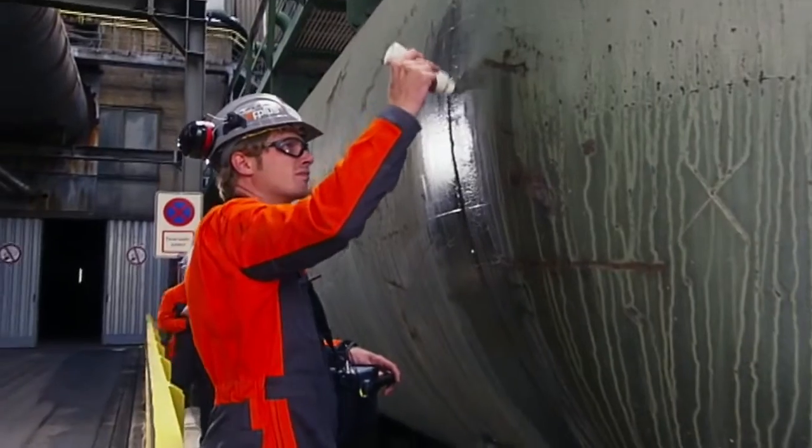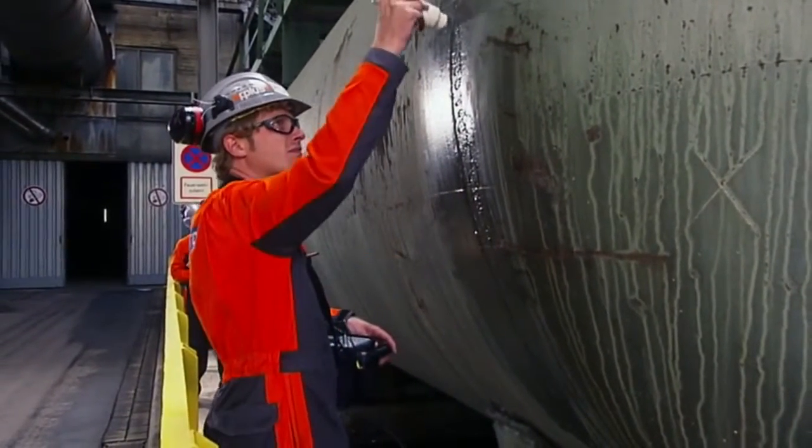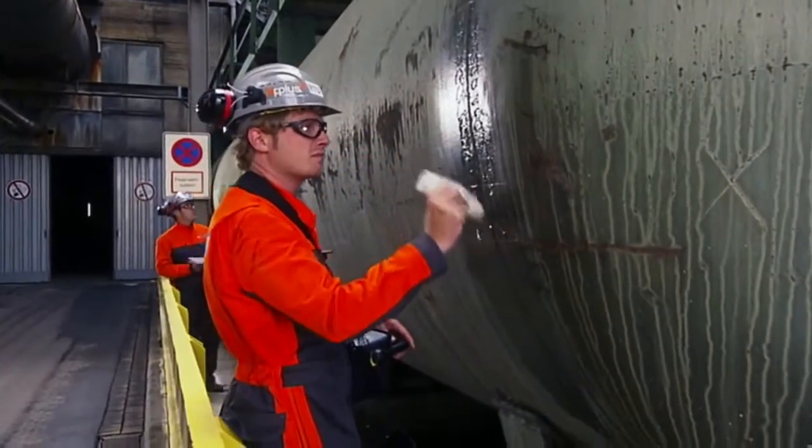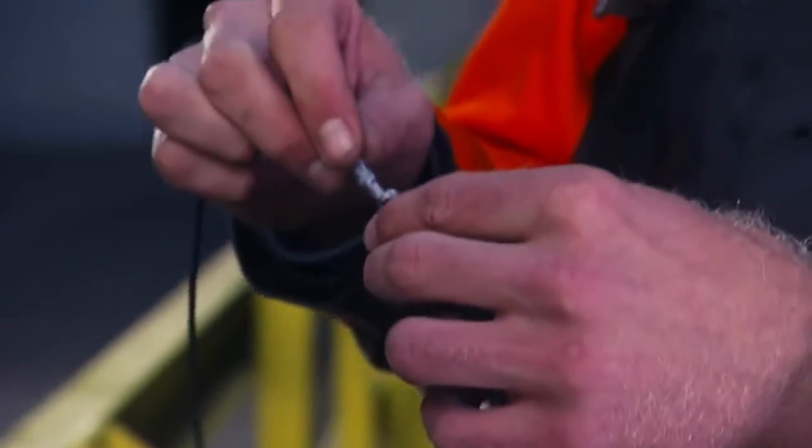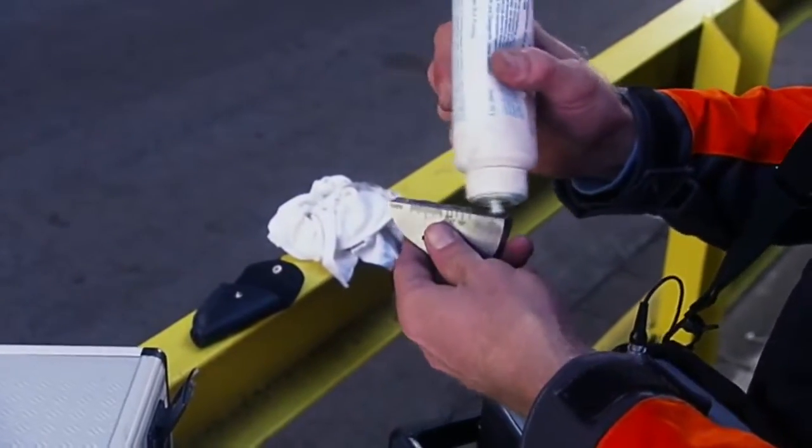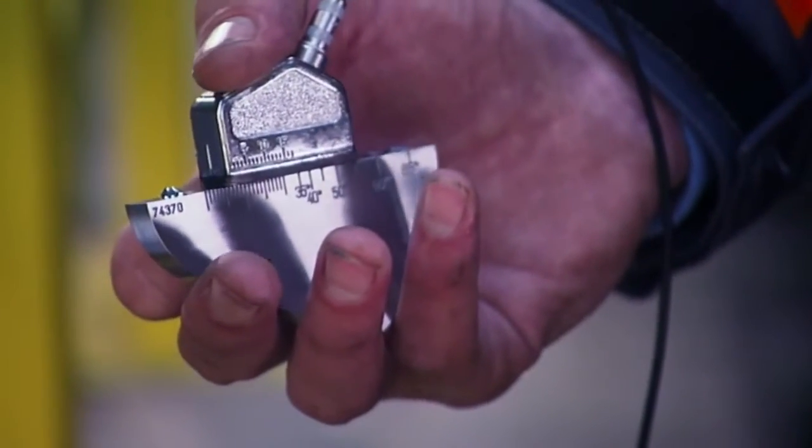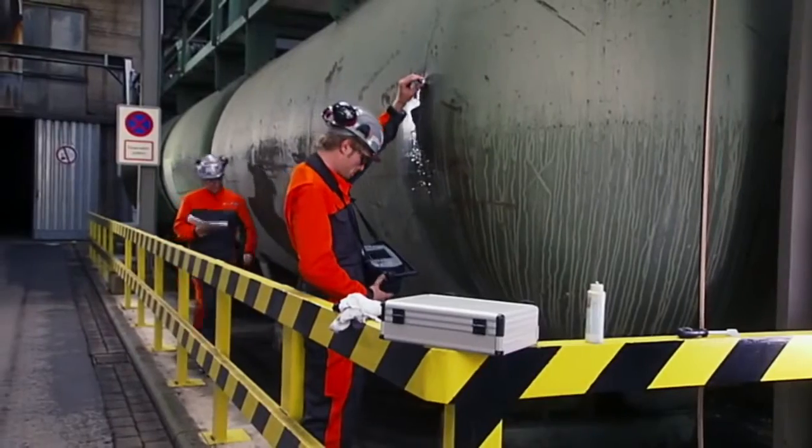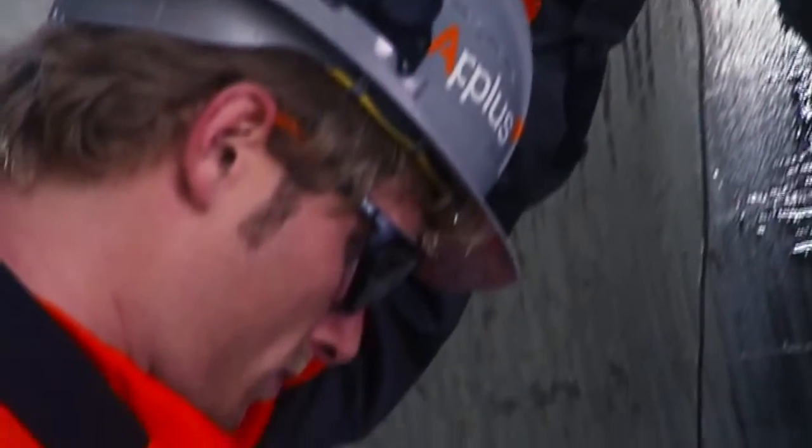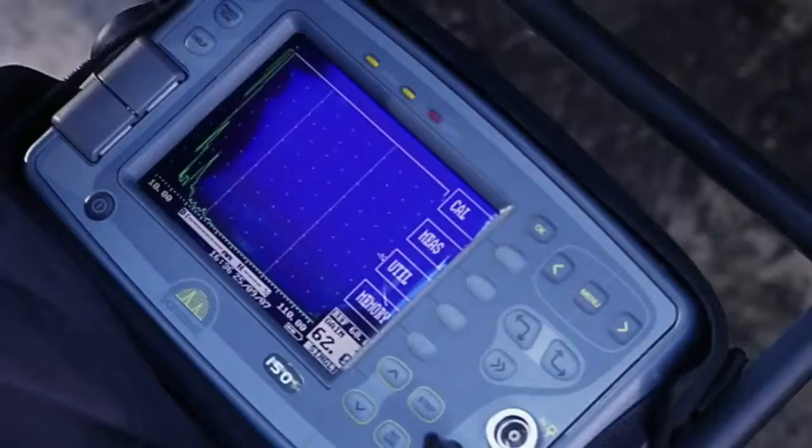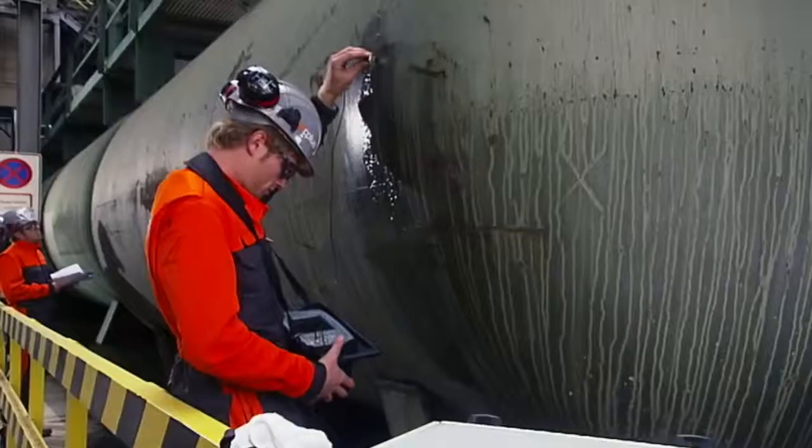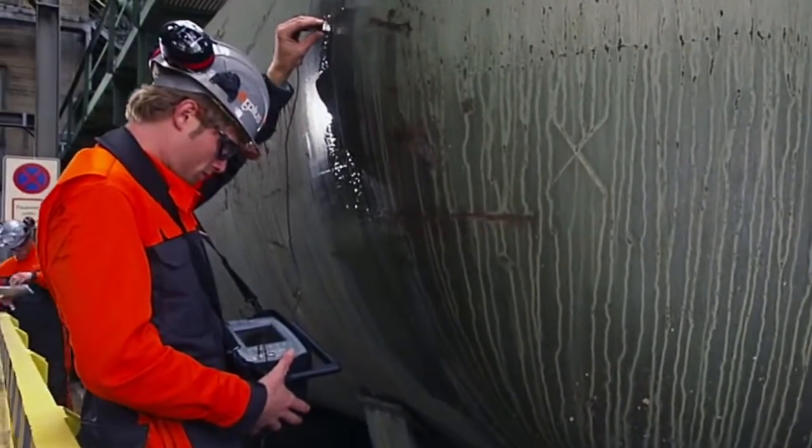The examiner first applies a contact fluid to enable the ultrasonic feeler to make proper contact with the material. This bonding layer serves to conduct the sound waves into the material. Without the contact fluid, they would immediately bounce back from the surface. A transducer converts an electronic signal into ultrasonic sound waves. It can both send and receive. The ultrasound equipment captures the reflected waves and converts this into a visual signal. This enables the examiner to see whether there are any discontinuities. If there is an indication, the exact location can be determined using calculations.